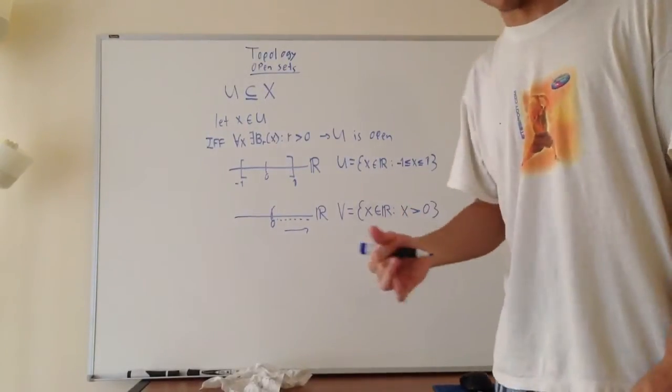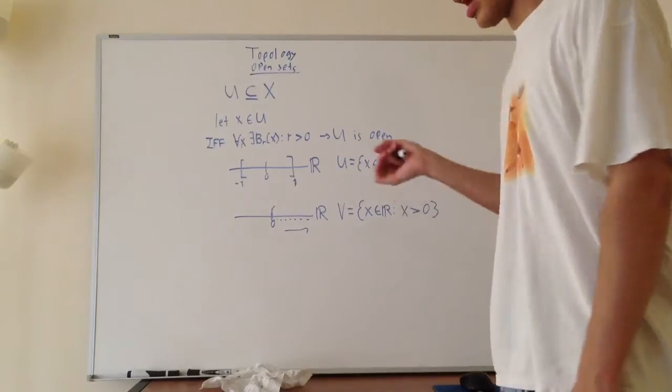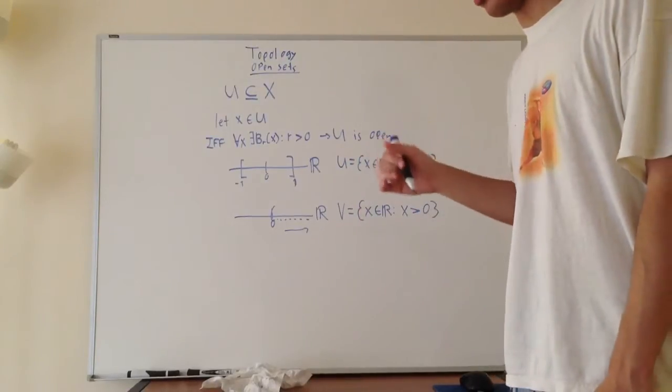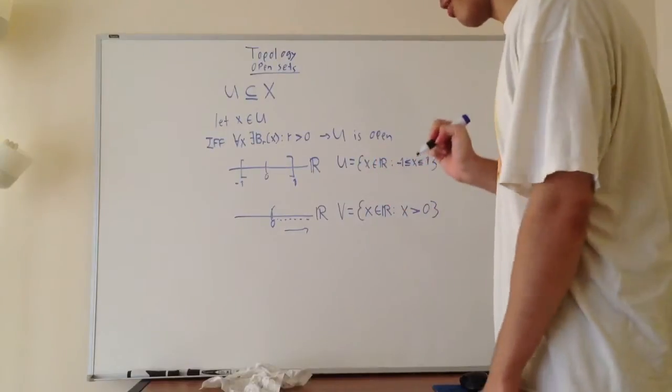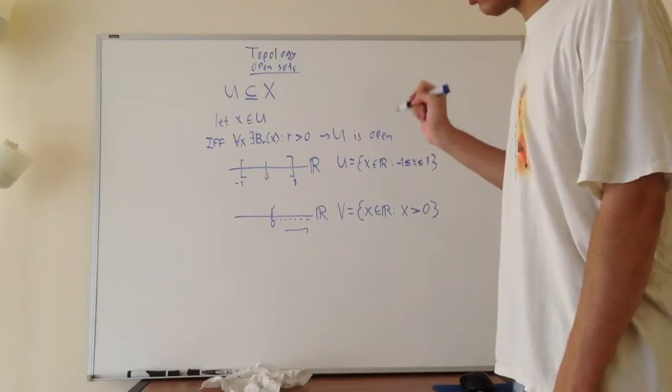All right, so in this video I'll be talking about the kinds of open sets and why those are useful in topology. Basically, an open set is a set where for every point you can draw an open ball around that point. So let's get right into it.